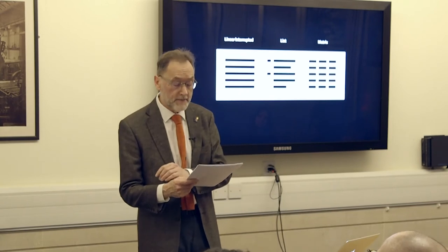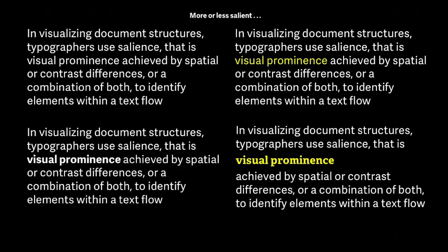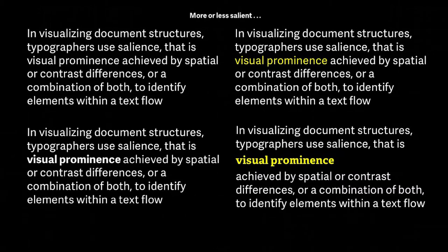The particular sequence and combination of these elements defines the structure of a text. In visualizing this structure, typographers typically use salience — that is, visual prominence achieved by spatial or contrast differences, or a combination of both — giving a graded identification of the various elements in a text flow. The salience value given to any element may be determined from two standpoints: a reading of the writer's intention, and an assumption of the reader's requirements. The typographer's role is to mediate between these poles, though there may be external determinants such as technical limitations or house style conventions.